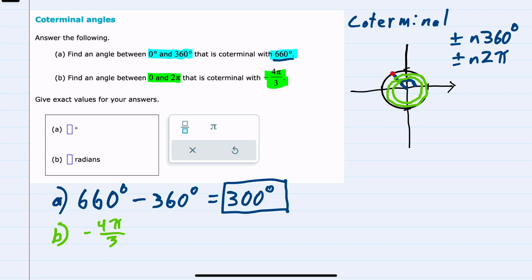instead of subtracting, I'm going to add. Since we're in radians, I can add a multiple of 2π, which is one full revolution. So I will add 2π.